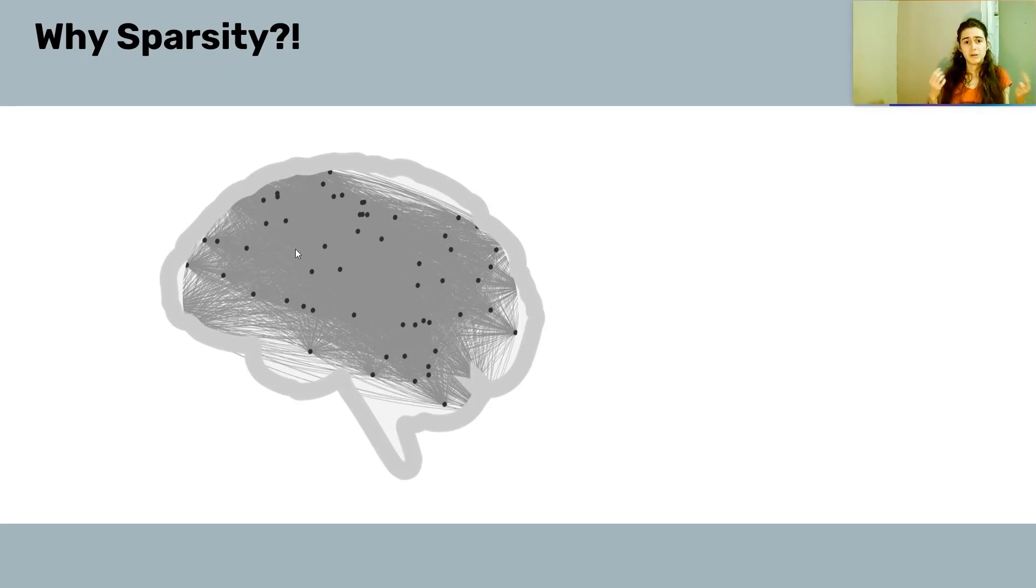If we had a connection between any pair of possible neurons, it would require a lot of memory, a lot of computation time—a very inefficient computation that doesn't align with how we assume the brain works. In contrast, we believe that there is some sparse connectivity pattern within the brain.